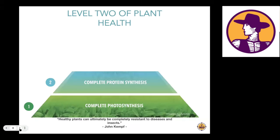At level two of the Plant Health Pyramid, plants are converting all of the nitrogen they've absorbed from the soil profile into complete proteins in each 24-hour photo period. We use a lot of sap analysis in our consulting work, measuring both nitrate and ammonium levels present in plant sap. Our goal is to see both nitrate and ammonium at zero, but to have total nitrogen at abundant levels. This is a very achievable, realistic goal — we see it on the majority of the crops we work with very quickly.